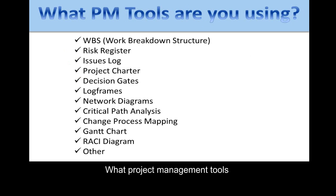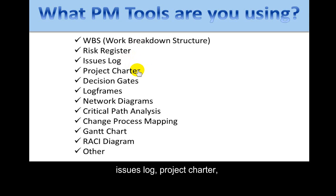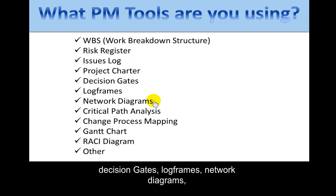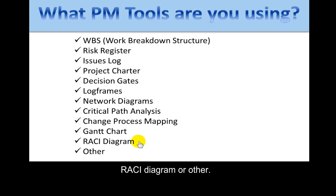What project management tools are you using? Please indicate from this list the tools that you've been using: Work Breakdown Structure, Risk Register, Issues Log, Project Charter, Decision Gates, Log Frames, Network Diagrams, Critical Path Analysis, Change Process Mapping, Gantt Chart, RACI Diagram, or Other. Please write in what the Other tool might be.